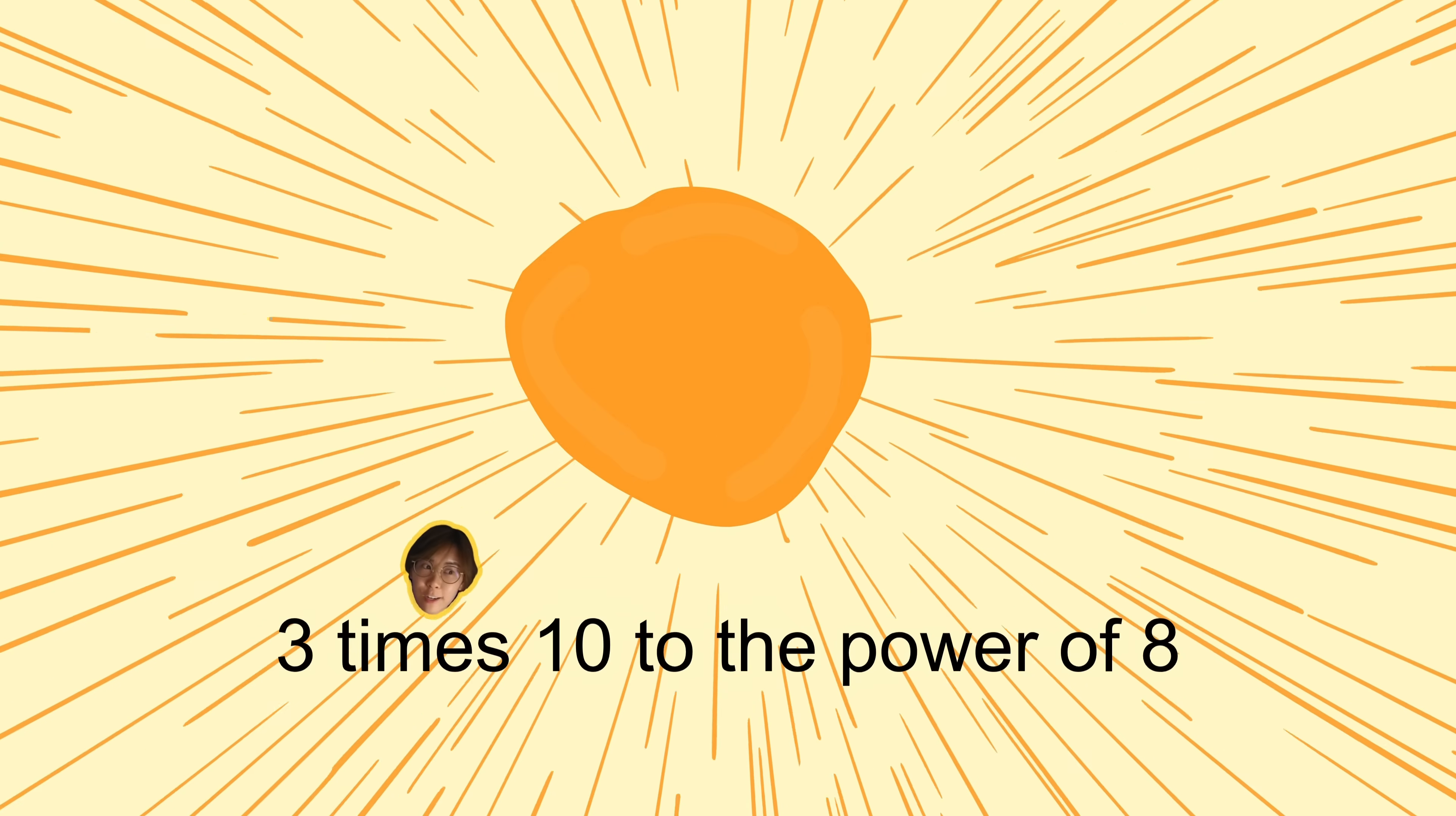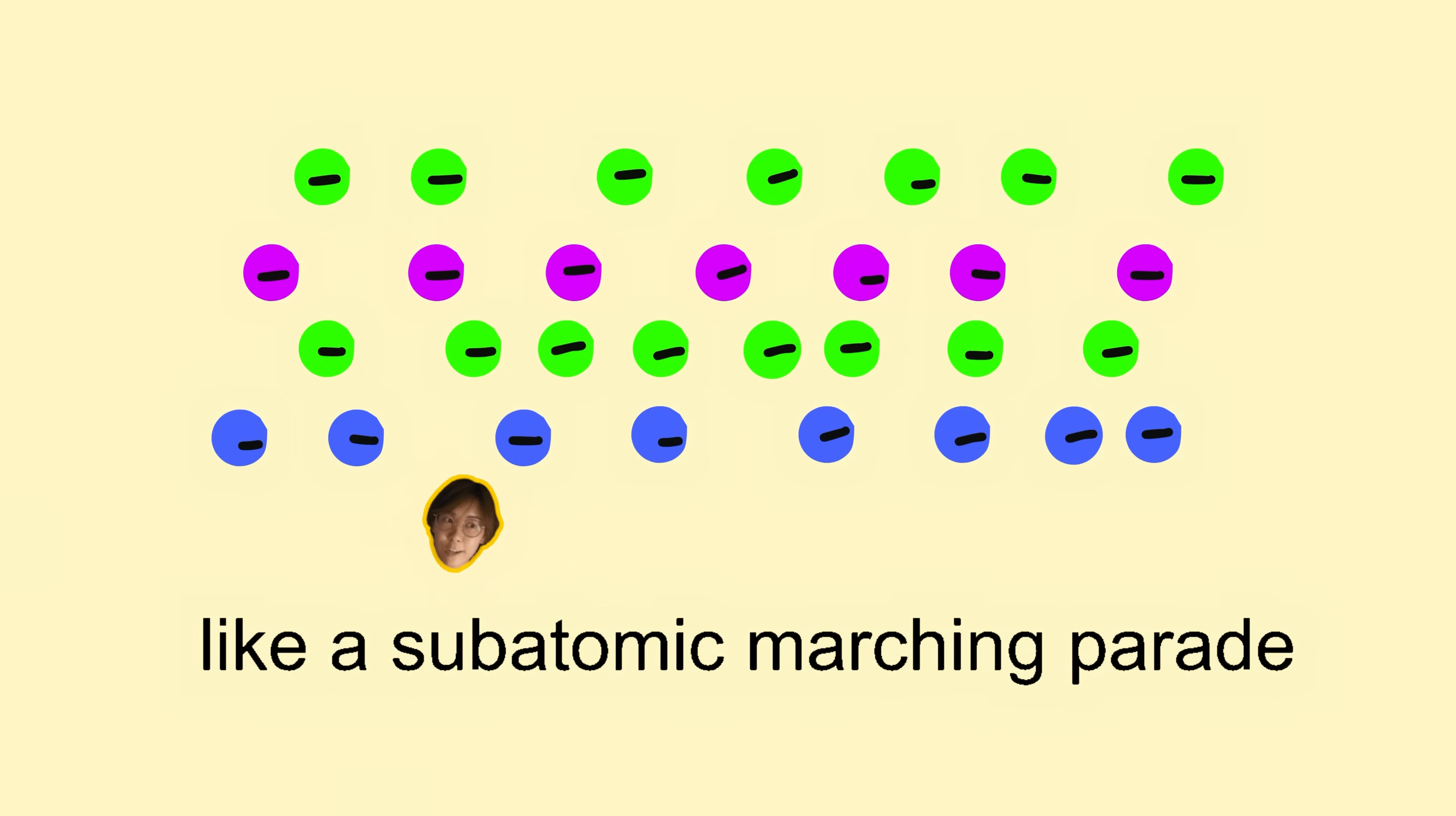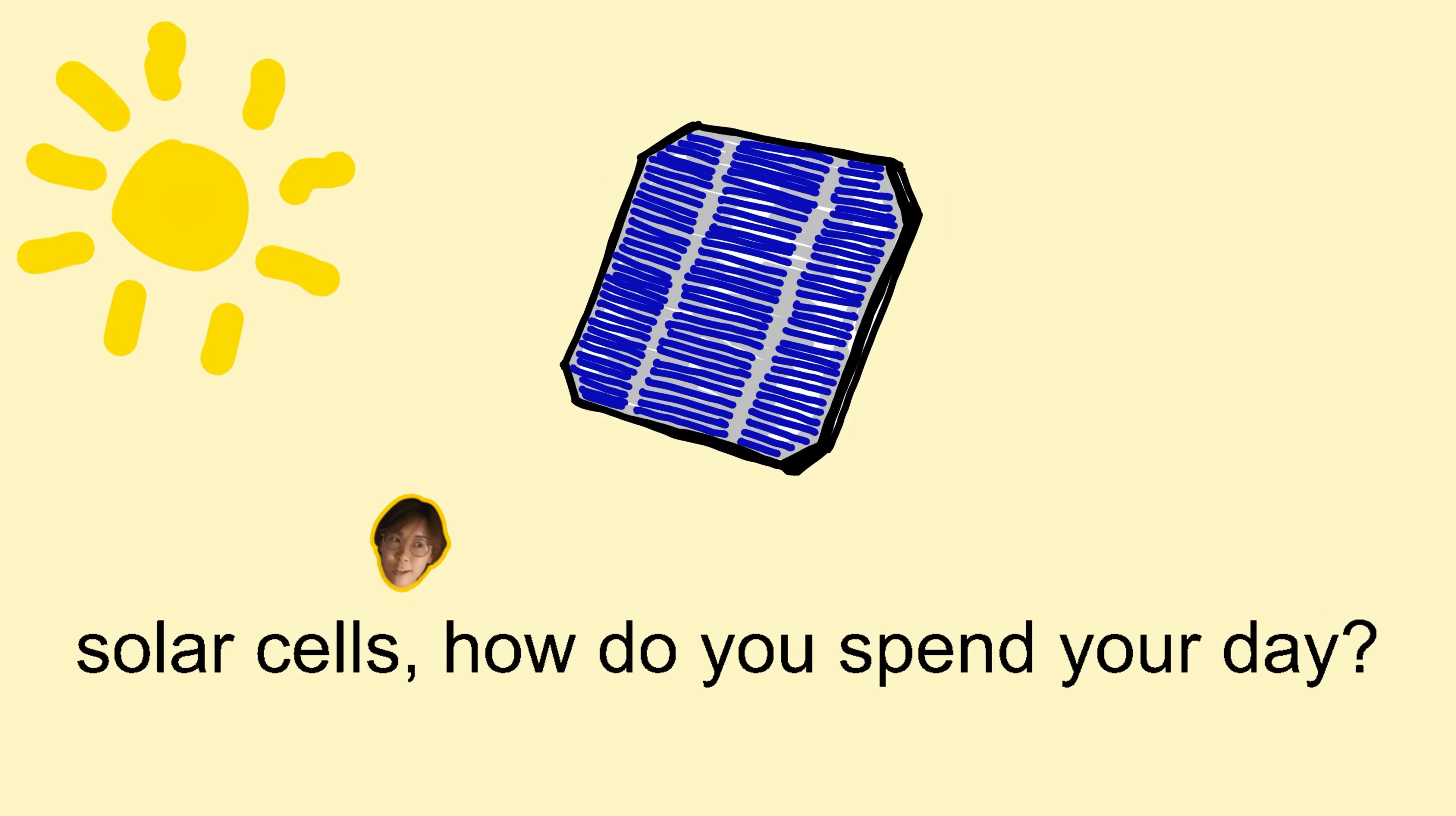Three times ten to the power of eight. When photons hit the panel, electrons start to race from AC to DC, electrons meet their fate on a one-way track like a subatomic marching parade. Oh, photons to power, it happens every day. Solar cells, how do you spend your day?